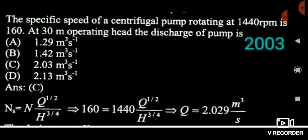The first specific speed question asked in 2003: a pump rotating at 1440 RPM, operating at 30 meter head. The specific speed Ns is given as 160 and discharge is asked. Putting Ns = 160 and N = 1440 into the formula, we calculate Q = 2.029 m³/s.